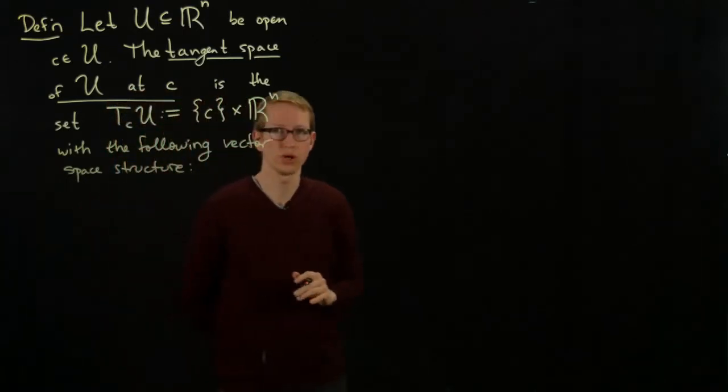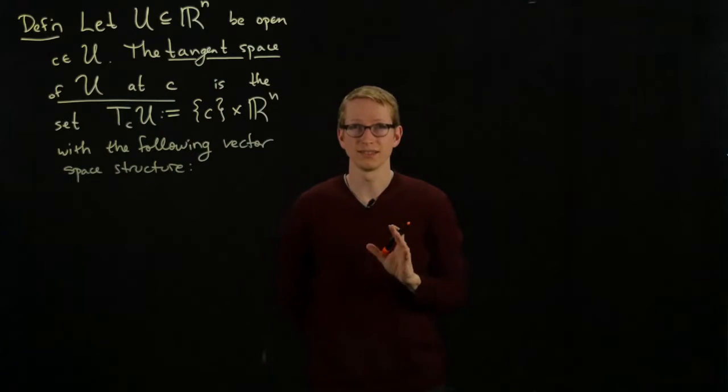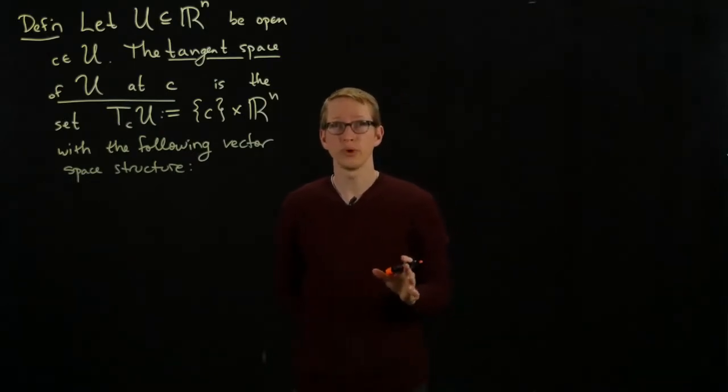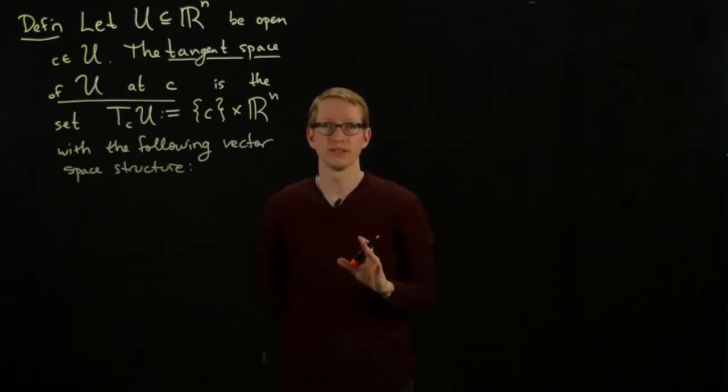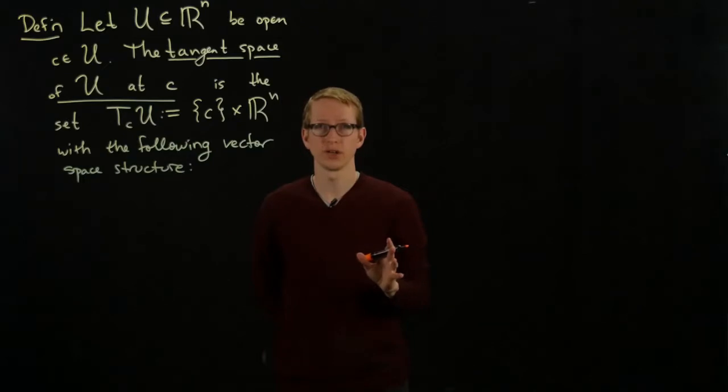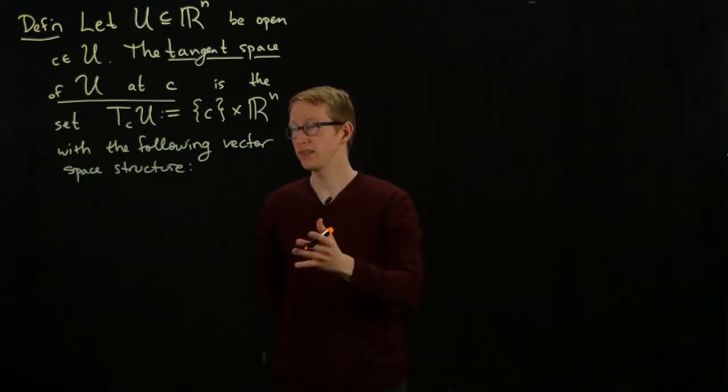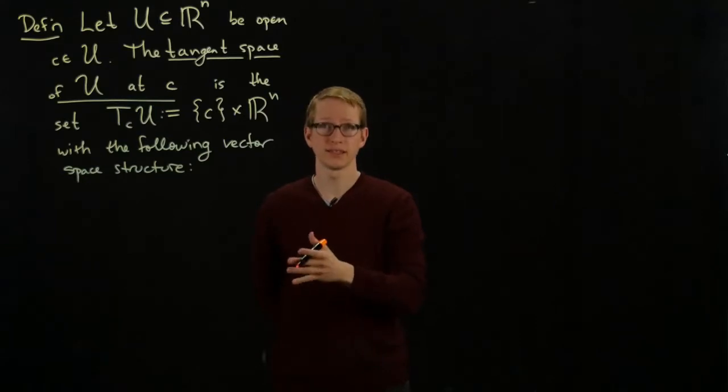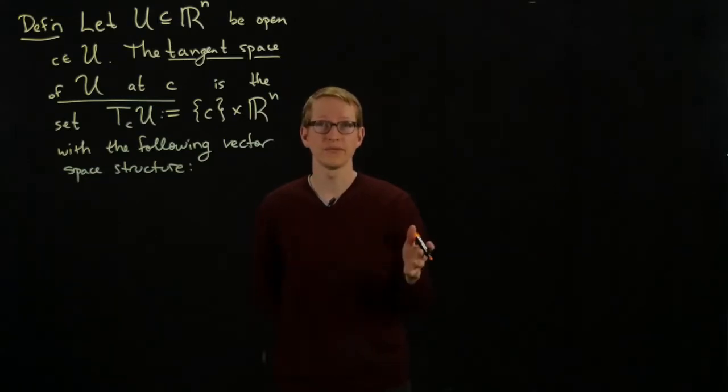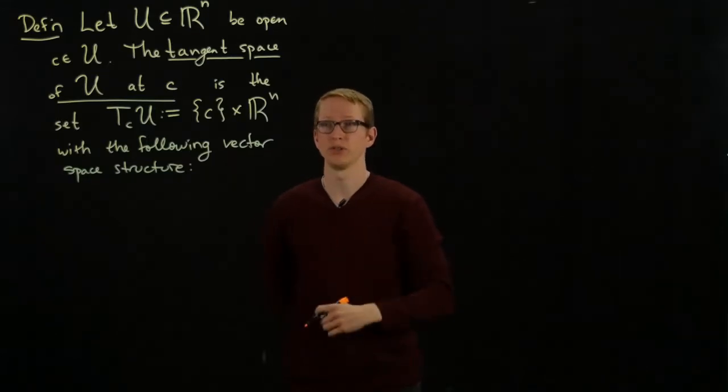Recall a vector space consists of a set together with a particular vector which we think of as the zero vector, and two other very important functions. One of them is the addition function that takes two vectors and spits out another vector. The other function takes a scalar, a real number, and a vector and multiplies the two. So it scales a vector by a particular factor.